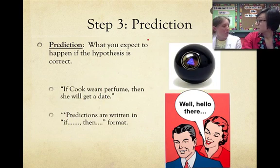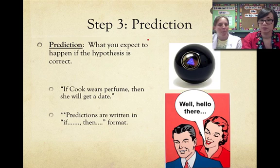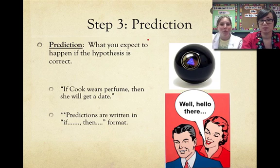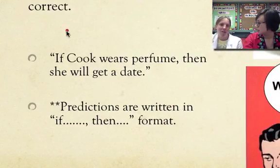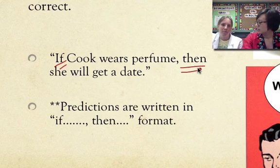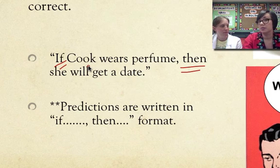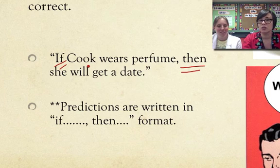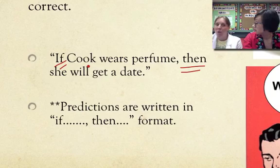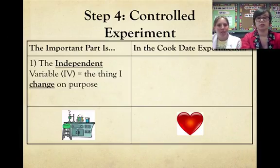Step three: make a prediction, which is what we expect to happen if the hypothesis is correct. The prediction is: if Ms. Cook wears perfume, then she will get a date. Notice that's an if-then statement — that's how we always try to set up our predictions. So, Ms. Cook can't get a date, Ms. Hines' hypothesis is that it's because of her body odor, and the prediction is that wearing perfume will get her a date. Now we need to perform a controlled experiment.